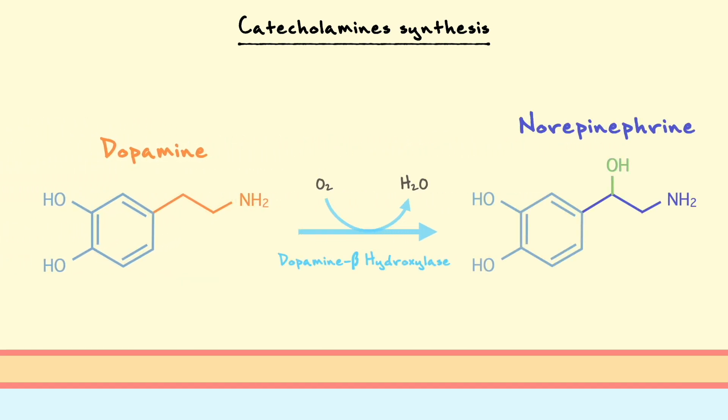In the third step, dopamine gets hydrated, here in green, by the enzyme dopamine beta hydroxylase to make norepinephrine, also referred to as noradrenaline sometimes.